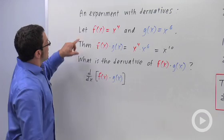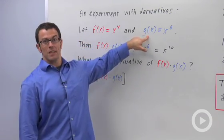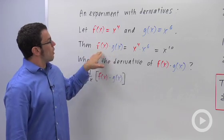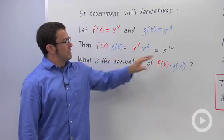Let me give you an example. I have two functions, f of x equals x to the fourth, and g of x equals x to the sixth. So I can make a product out of the two functions, f times g, and that'll turn out to be x to the tenth.